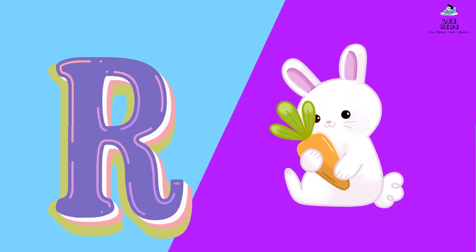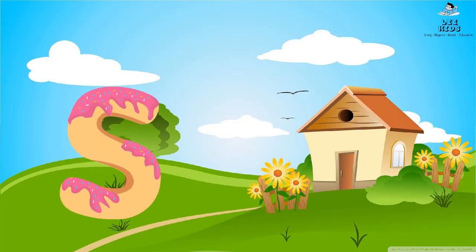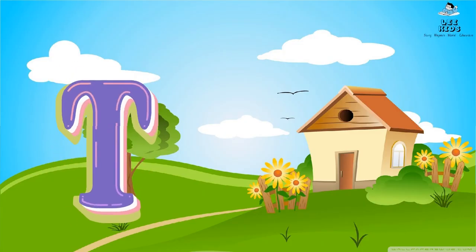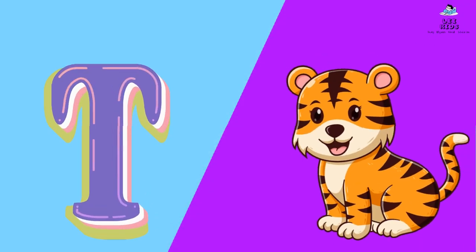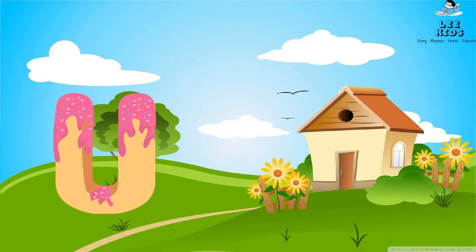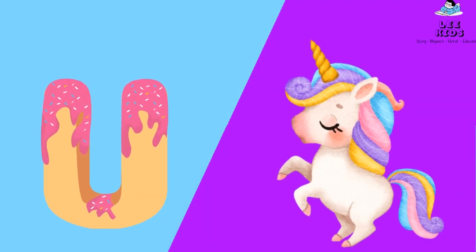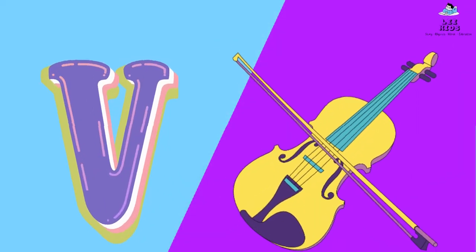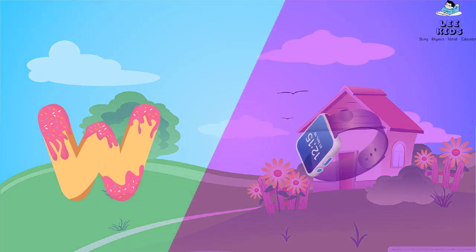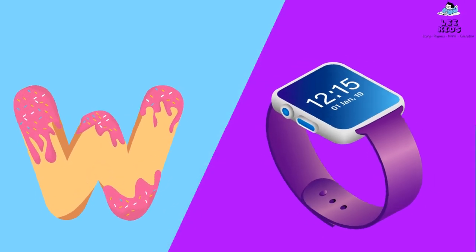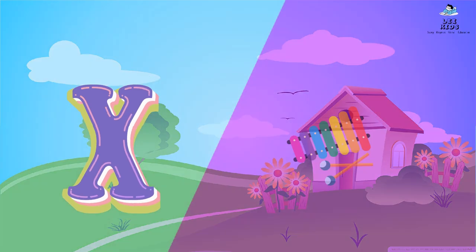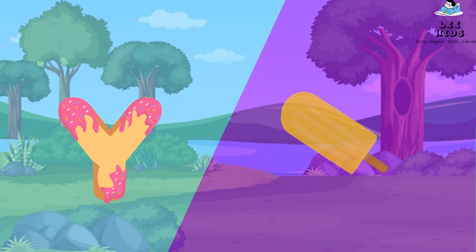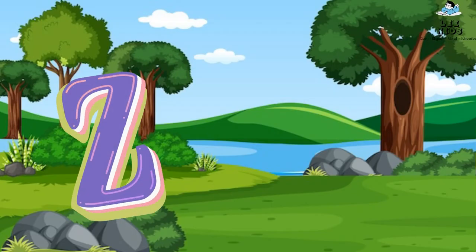S for sun, T for tiger, U for unicorn, V for violin, W for watch, X for xylophone, Y for yellow, Z for zebra.